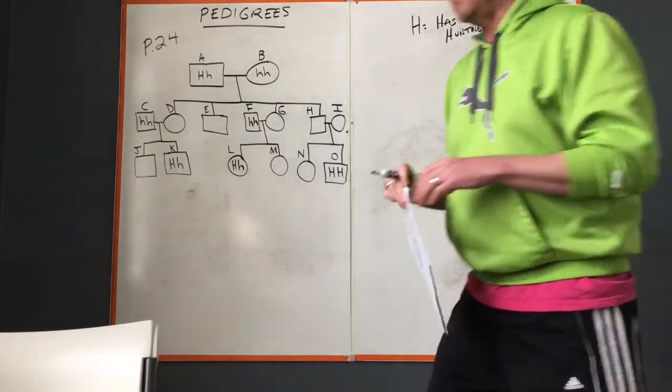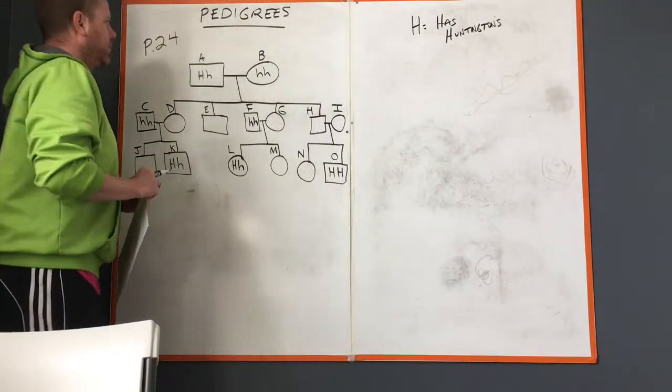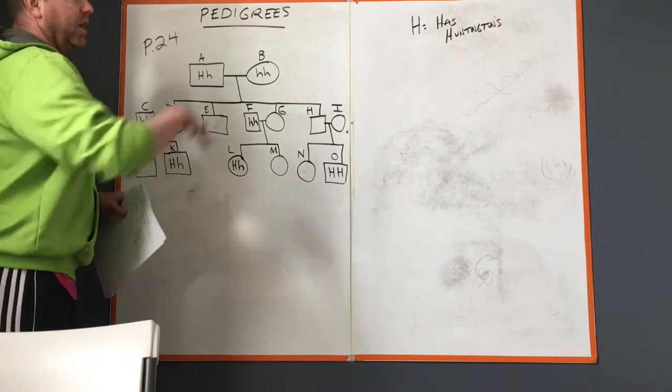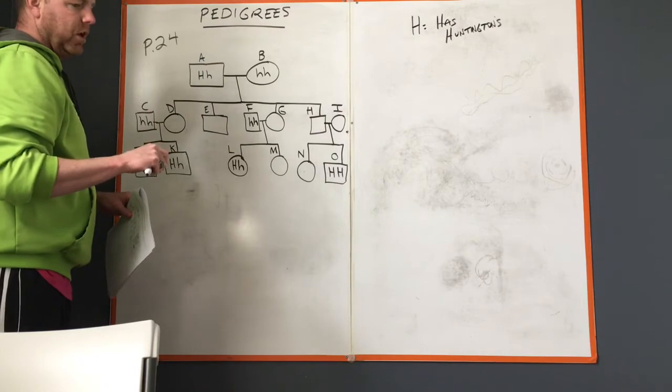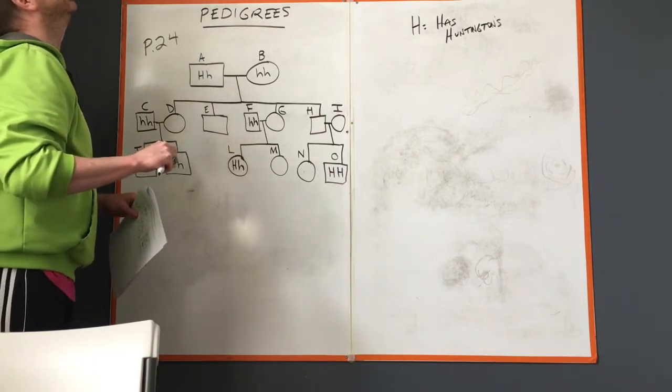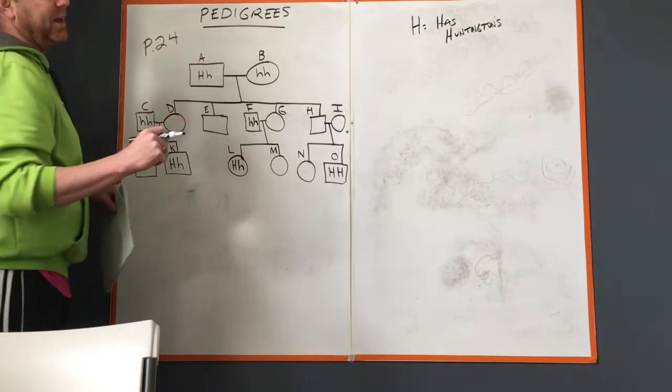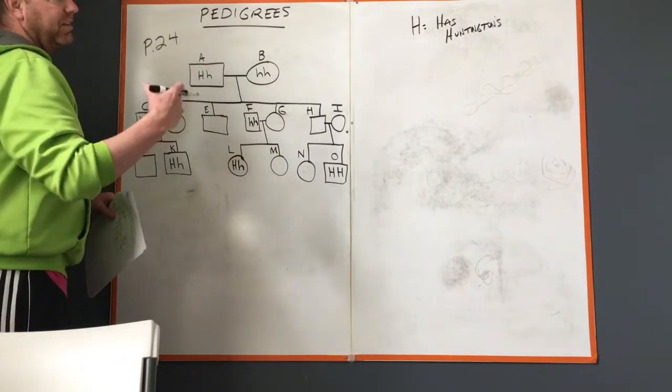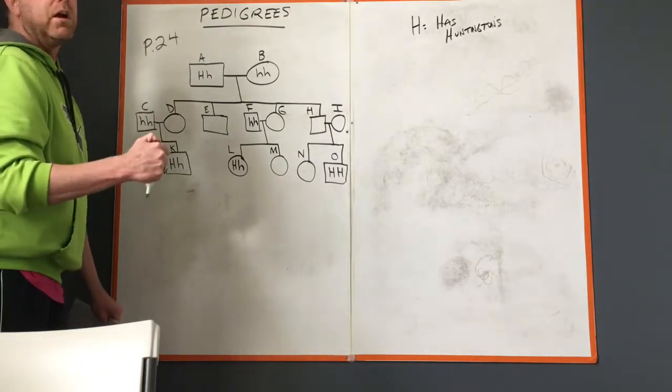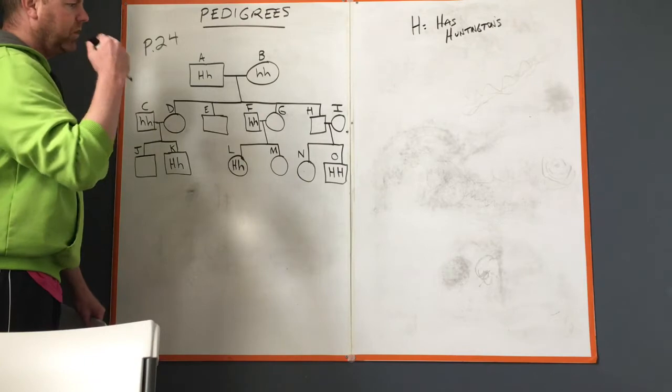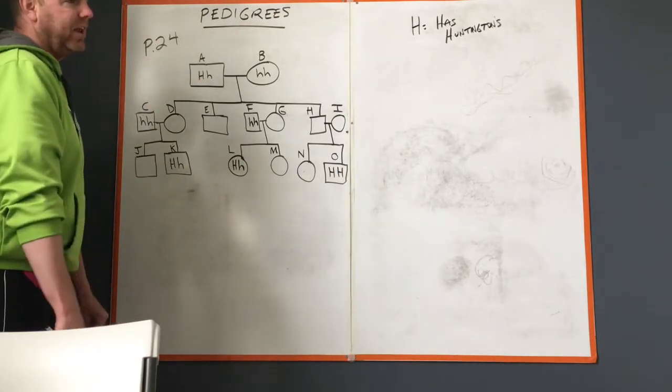I can remember I was dating a young lady in college, her name's Marie, and Huntington's was pretty prevalent inside of her family. Her dad had it and her grandfather. It doesn't skip generations. Huntington's is a nervous disorder that works almost similar to Parkinson's where it causes the nervous system to malfunction and shut down.